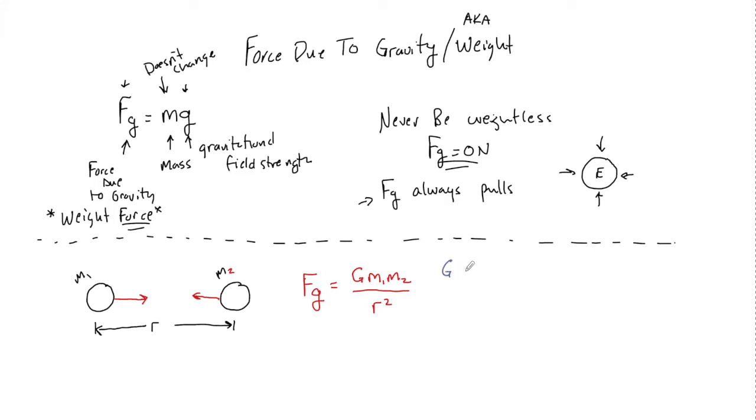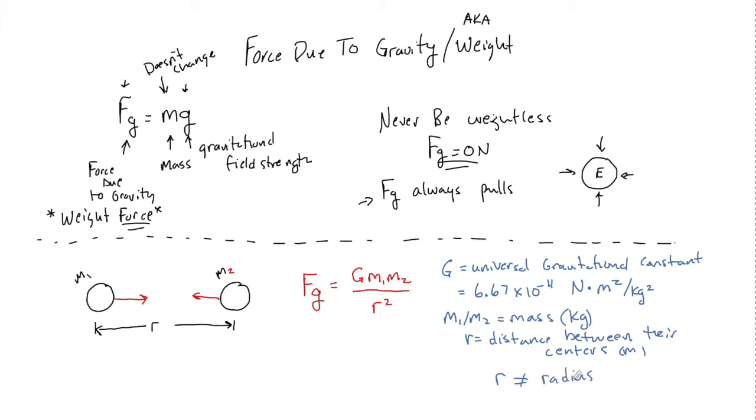So G is going to be the universal gravitational constant. It is either going to be on the reference table that you have for your course or it'll be given to you inside the problem. It has a value of 6.67 times 10 to the minus 11 newtons times meters squared divided by kilogram squared. The m's m1 and m2 are just masses and they have a unit of kilograms as always. And r is the distance between the center of their masses, and this is going to be in meters. Guys, r is not radius. Now we have to really know that because we're going to start talking about moving and centripetal motion and moving in circles and things like that where we're going to be talking about radiuses, radii, whatever. But r in this case is not radius. It is the distance between their centers.